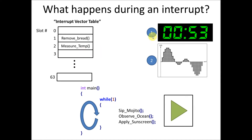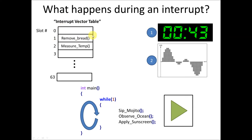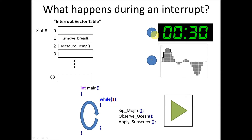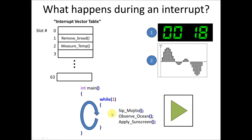We reviewed this at the end of the last video. Basically, when some peripheral triggers an interrupt, the first thing that happens is it looks up an interrupt service routine in the interrupt vector table. This is a function associated with some trigger or interrupt request that gets executed whenever that trigger happens. For instance, when a timer ticks down to zero, it'll trigger a function like 'remove bread' to execute. It pauses execution of whatever main function is currently happening, executes the ISR function, and then resumes execution.